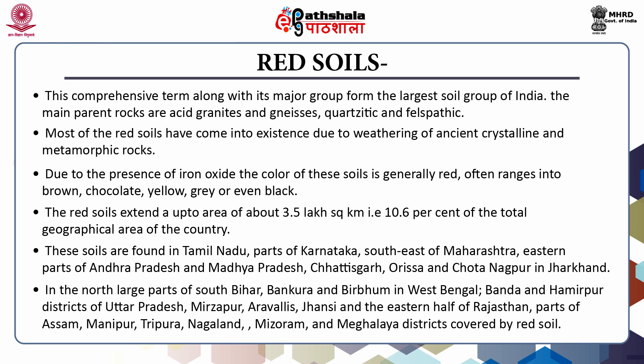The red soils occupy a vast area of about 3.5 lakh square kilometers, which is about 10.6 percent of the total geographical area of the country. The texture of these soils varies from sand to clay, the majority being loams. On the upland, the red soils are thin, poor and gravely, sandy or stony and porous. But in the lower areas, they are rich, deep, dark and fertile.